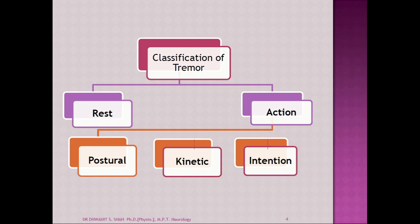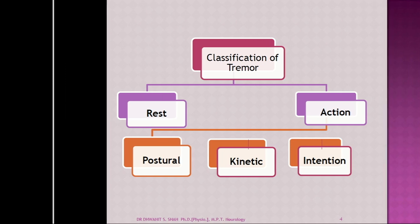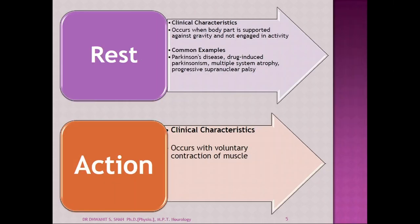The classification of tremors: first is the resting tremor, second is the action tremor. If it is a resting tremor, the clinical features mostly occur when the body part is supported against gravity and not engaged in activity. Examples include Parkinson's disease, drug-induced Parkinson's disease, multiple system atrophy, and even progressive supranuclear palsy.